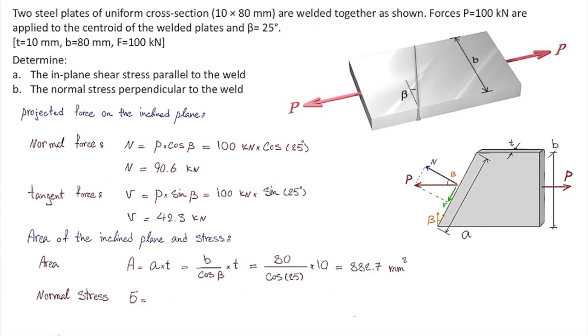For normal stress, sigma is going to be force divided by the area that we just calculated and plugging in the values would result in 102.7 megapascals.